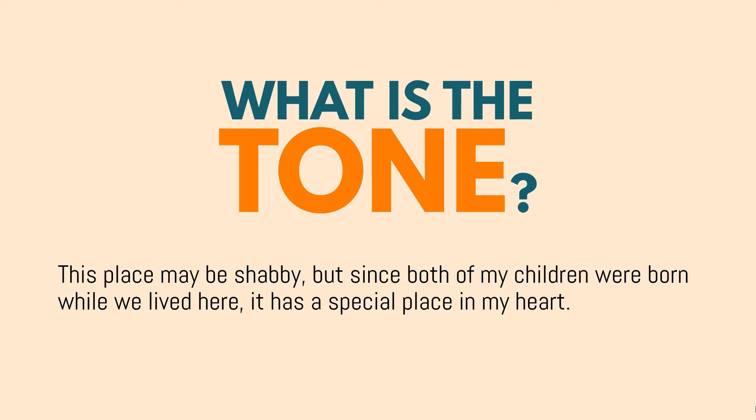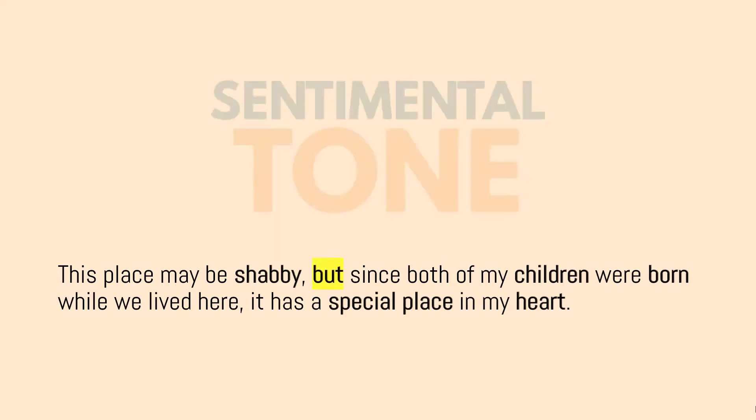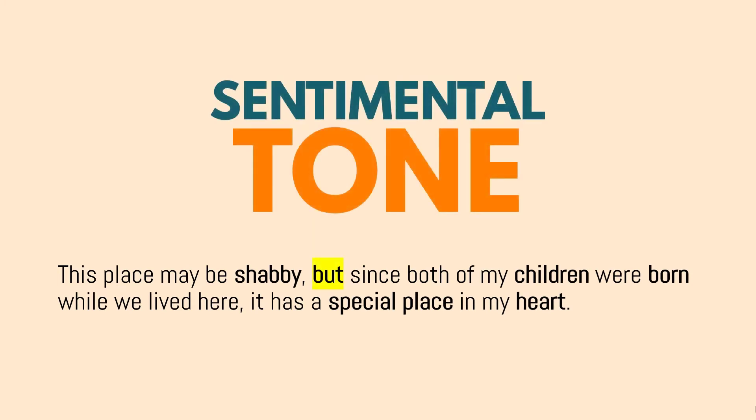Let's take a look at the first example: 'This place may be shabby, but since both of my children were born while we lived here, it has a special place in my heart.' In this case, we are talking about a sentimental tone, because even though the place may be shabby, we're not actually looking down on it. We're talking about special events that happen, such as the author's children being born, and it's having a special place in the author's heart. The contrast using the word 'but' shows you that the second part is more important.